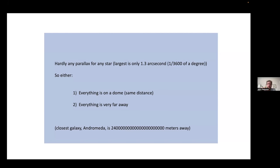What any ancient astronomer basically found is there's hardly any parallax for any star in the entire galaxy. Eventually, years later in the last century with telescopes, people found the largest parallax of any star was Alpha Centauri — the closest star to us — and it was only 1.3 arc seconds. An arc second is 1/3600 of a degree. So it's a very tiny amount, and you have to wait six months to watch the star move by that very small amount. There's hardly any parallax for any star in the galaxy, and there are only two explanations.